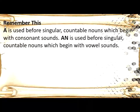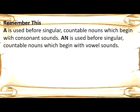Remember this. A is used before singular countable nouns which begin with consonant sounds. AN is used before singular countable nouns which begin with vowel sounds.